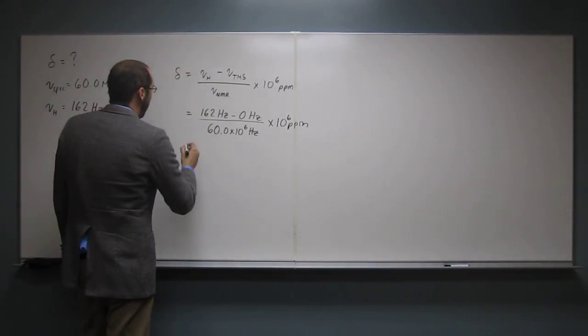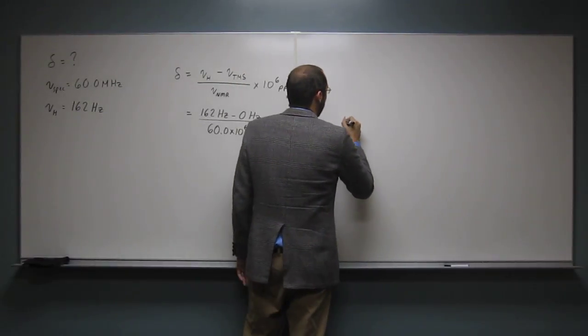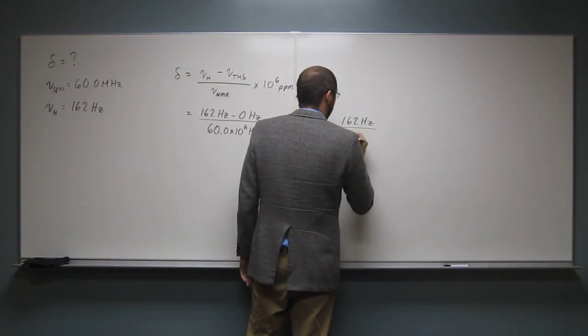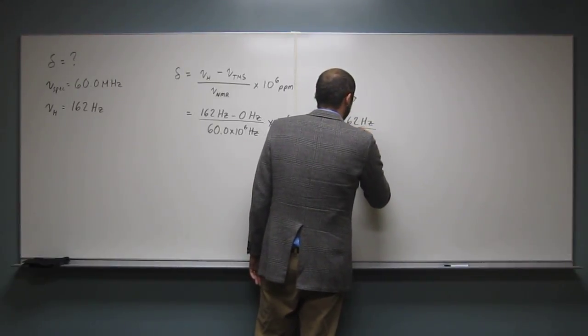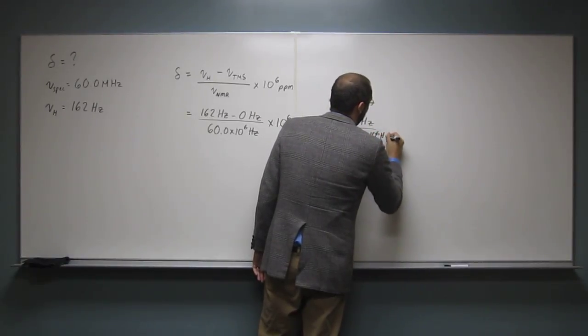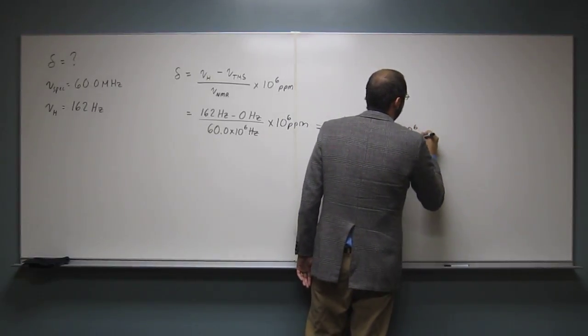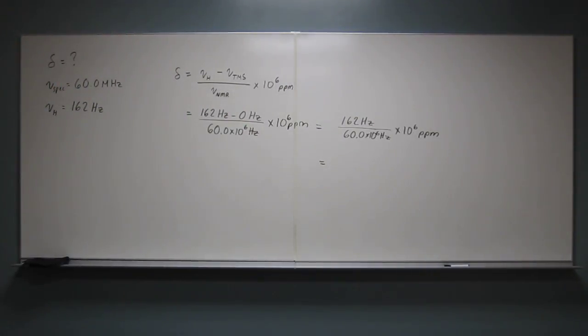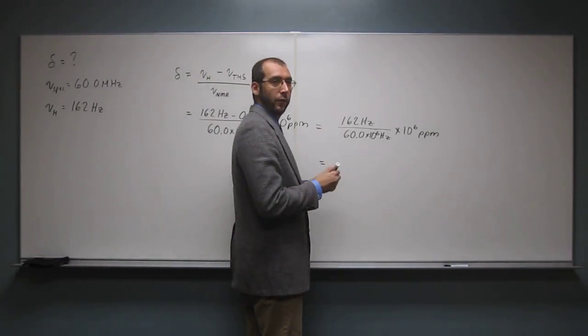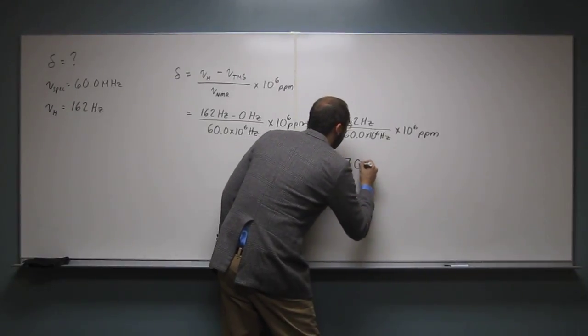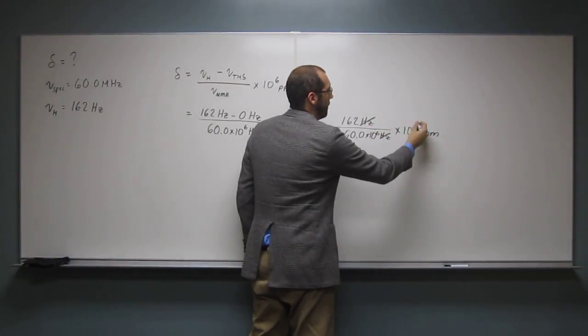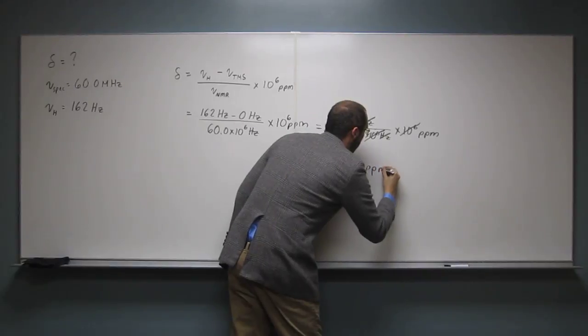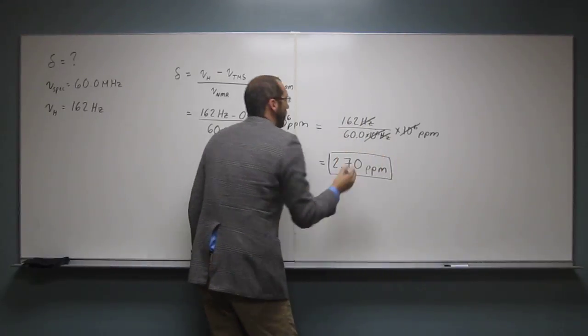So let's reduce this. So it's going to be 162 hertz divided by 60.0 times 10 to the 6 hertz times 10 to the 6 PPM. Let's get our calculators out. So 162 divided by 60, and to do it to 3 sig figs, it's going to be 2.70, but hertz has been canceled out, so we get PPM.